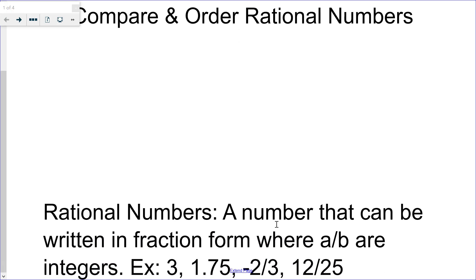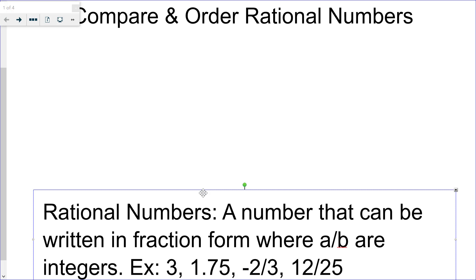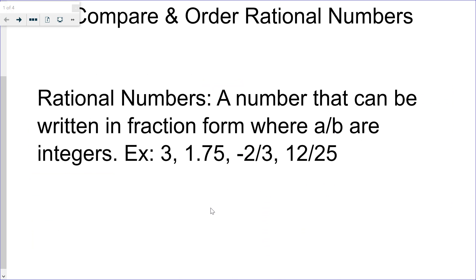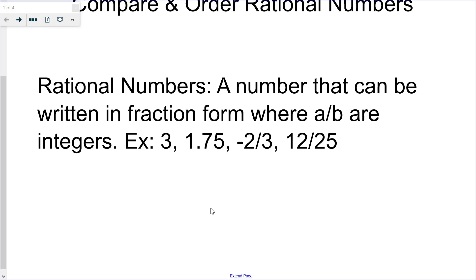Before we get into actually doing that, let's take a look at what rational numbers actually are. We've already learned this in previous videos, but a rational number is a number that can be written in fraction form where both numbers are integers. For example: 3, 1 and 75 hundredths, negative two-thirds, 12 twenty-fifths — all of these numbers are rational numbers.